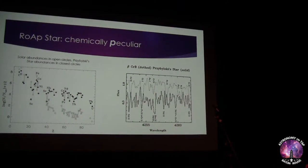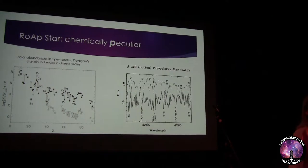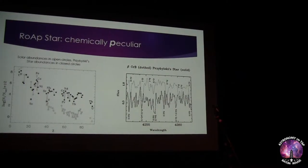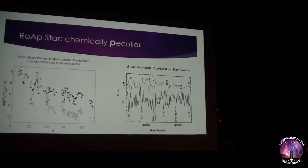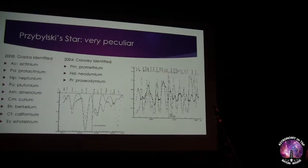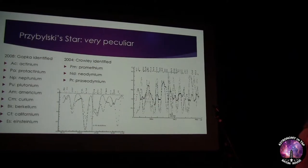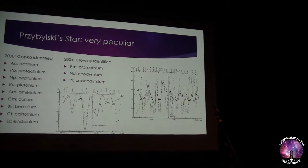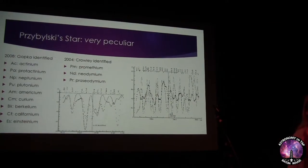When we compare Chbilsky's star against beta CRB, which is another ROAP star, Chbilsky's star is still really weird. Beta CRB's spectrum in dotted lines and Chbilsky's in black show peaks that are totally different amounts and don't match up at all. Chbilsky's star is very peculiar — really weird even for an AP star — and that's part of why it's so interesting.